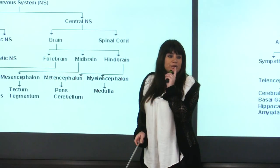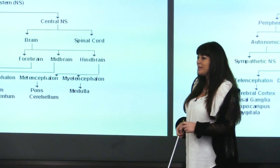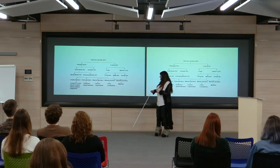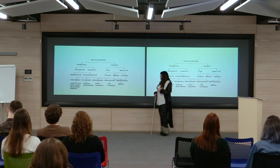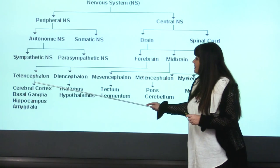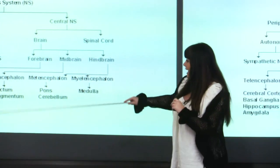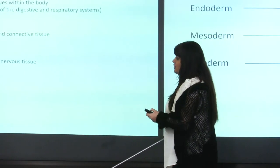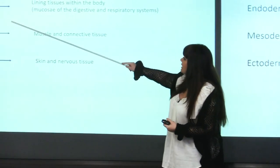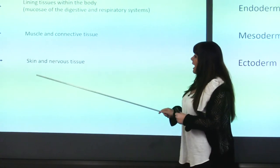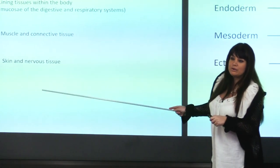Different embryonic vesicles give rise to the formation of different brain structures. When an embryo forms from the fusion of sperm and egg, at first there are three tissue layers: endoderm, mesoderm, and ectoderm. It is the ectoderm — the outermost layer — from which both the skin and nervous tissue are made. A neural fold forms in the ectoderm and eventually becomes a tube called the neural tube.